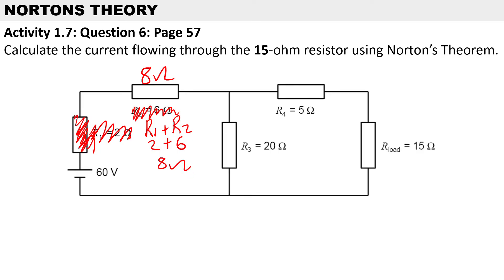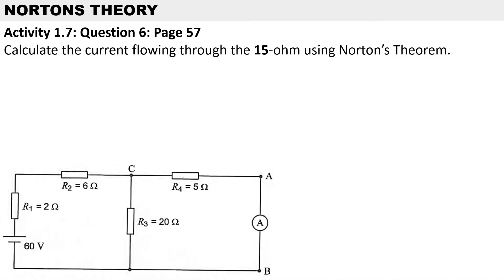The first step to solve for the load current through the 15-ohm resistor: we first need to calculate the short-circuit current. The short-circuit current is basically the same as Norton's current, I_norton. You can see that we have short-circuited the load resistor, and we want to calculate the current through that short circuit.